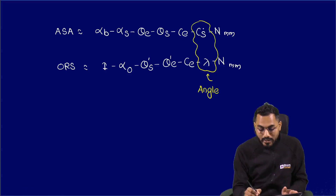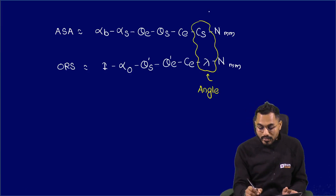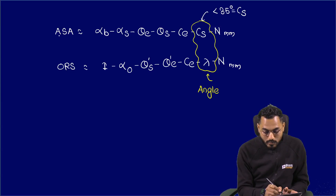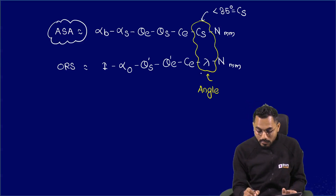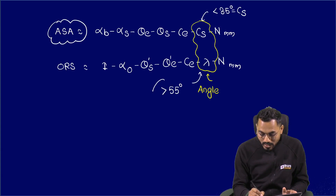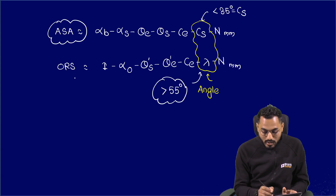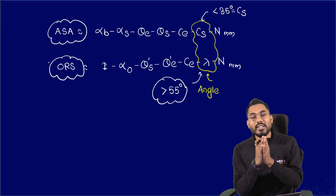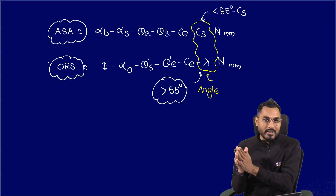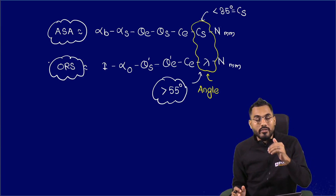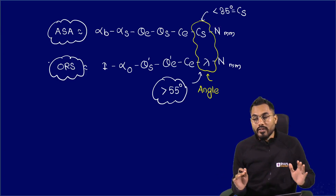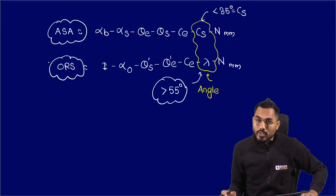Come back and check the tool signature: identify the sixth-place angle. If that sixth-place angle is less than 35 degrees, it is the side cutting edge angle C_s, which means it is an ASA tool signature. If the sixth-place angle is greater than 55 degrees, it is the principal cutting edge angle lambda, which means it is an ORS tool signature. Please use this trick when solving numericals. Thank you.